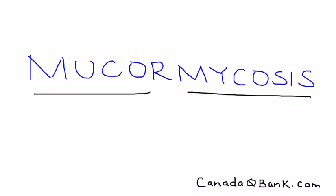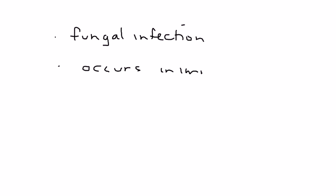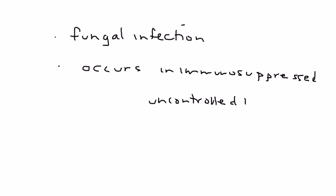Mucormycosis is a devastating fungal infection that occurs most commonly in patients who are immunosuppressed or have uncontrolled diabetes. Those are the two most common patient groups that develop this serious fungal infection. The names of the fungal species are as follows.